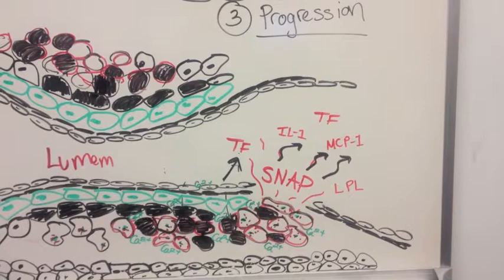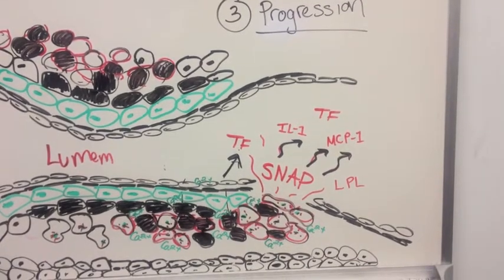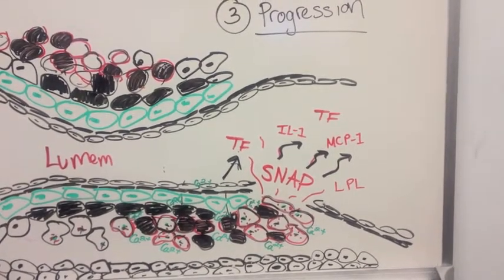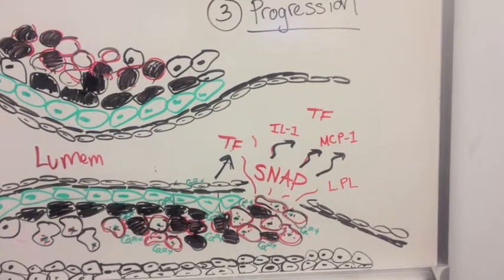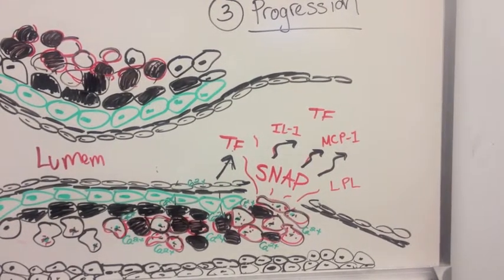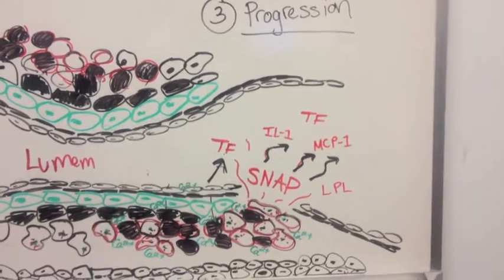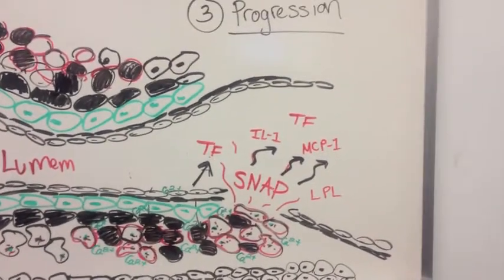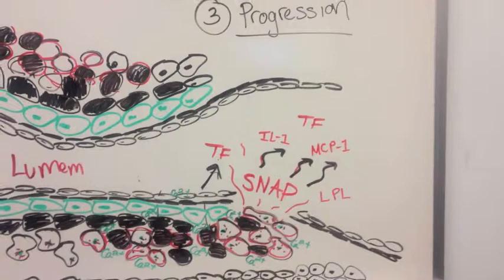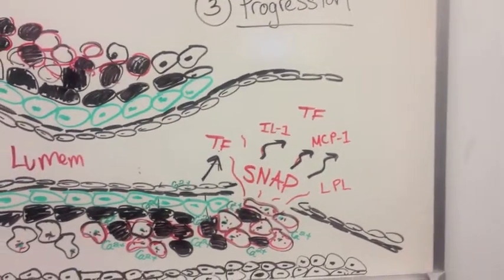There is a break in the endothelium and the blood and the lumen is exposed to the macrophages which release a number of chemoattractants and platelet aggregating factors to begin the clotting cascade.